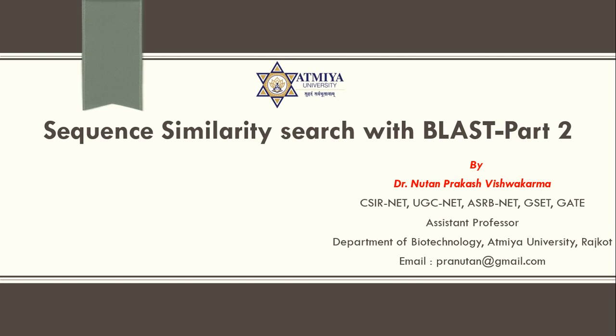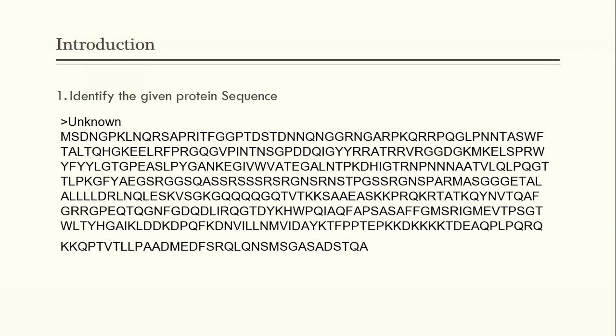In this video, we are going to address two questions. Question number one: say for example, I have one unknown protein and I want to know the function of this particular protein, or I want to know whether someone has already identified it or not. For example, a scientist has gone through sequencing — they isolated the protein, purified it, and performed sequencing. Now they come up with a particular sequence and want to identify the name and function of that protein.